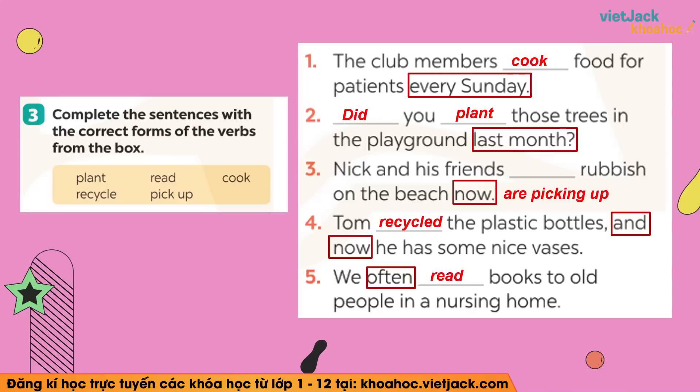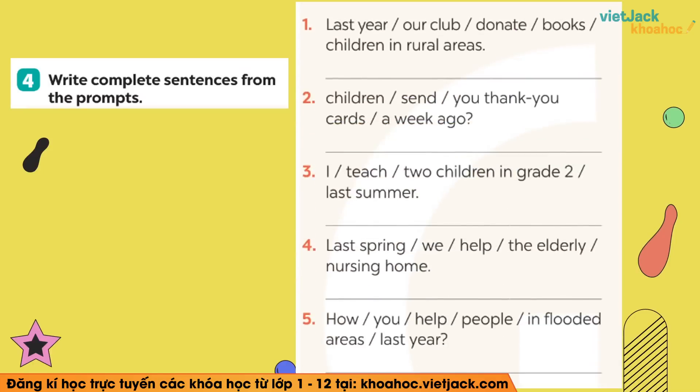Hơi khó hơn các bài khác một chút, nhưng mà cũng không khó lắm, các bạn vẫn làm được. Mình sẽ đến bài tập số 4: Write complete sentences from the prompts — các bạn sẽ hoàn thành và viết câu hoàn chỉnh dựa vào những từ gợi ý nhé. Để viết câu hoàn chỉnh thì các bạn nhớ phải xác định đâu là chủ ngữ, động từ, tân ngữ, thành phần còn lại, và quan trọng là động từ ở thì nào, câu là khẳng định, phủ định hay nghi vấn. Bài này cô sẽ cho các bạn 10 phút để hoàn thành.